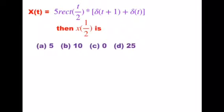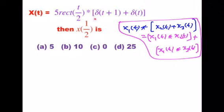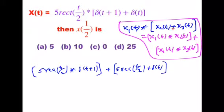The first step is applying the distributive property of convolution. By applying this property, the given problem becomes: 5 into rectangle function of t by 2, convolution with δ(t+1), plus 5 into rectangle of t by 2, convolution with δ(t).